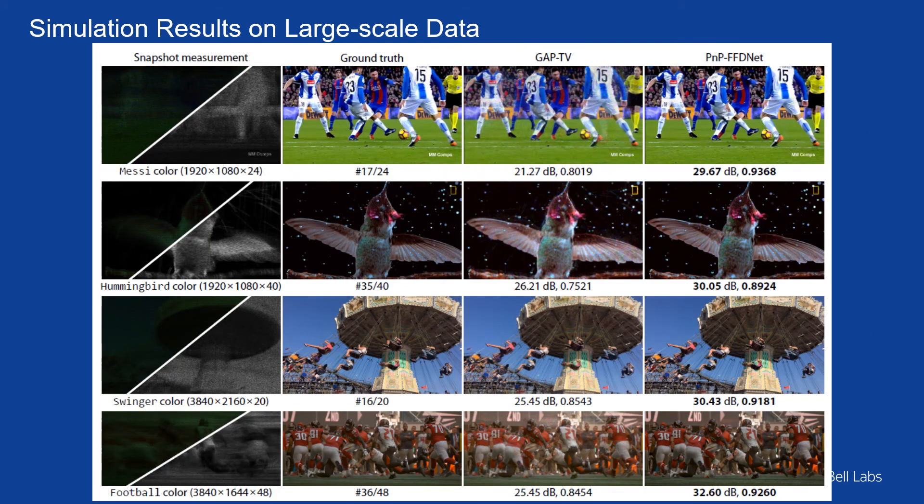Next we try the large-scale dataset. At this scale, DeSCI is simply too slow to run within a reasonable timeframe. GAP-TV produces this result, while PnP-FFDNet is much better than GAP-TV, and both can finish within an hour or even minutes.